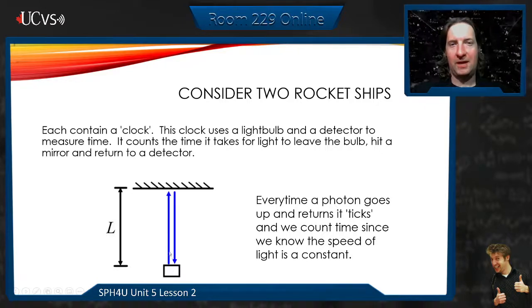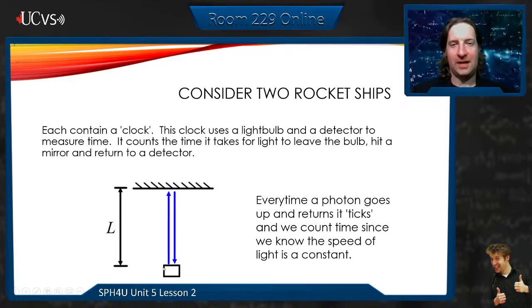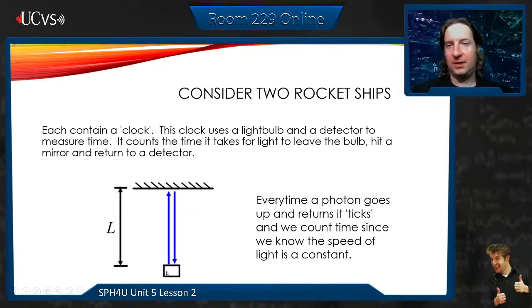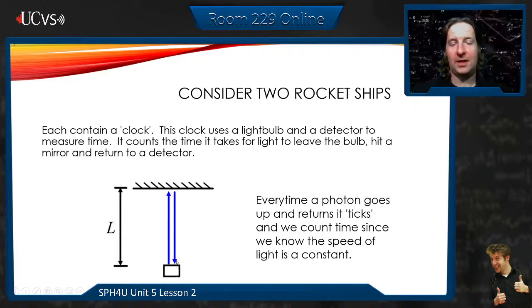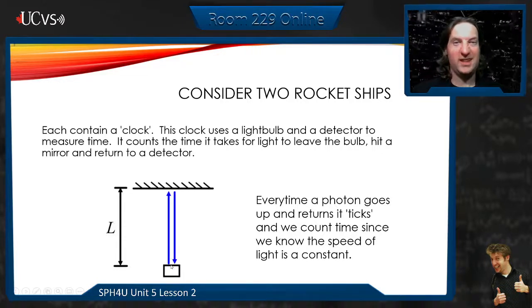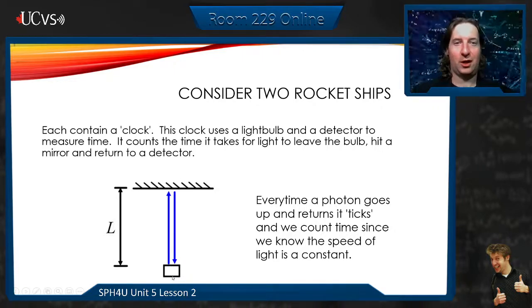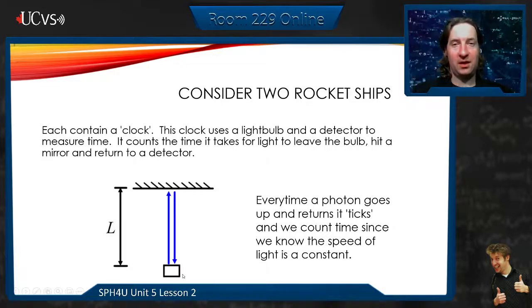So the time it takes for the light, now this is theoretically impossible, right? But we're just going to use this in our thought experiment as our clock. We're going to use something traveling at the speed of light as our clock. It's going to go up, it's going to come down, and it's going to tick. So every time it goes up and down, that's another tick in our clock. And we're going to use that as our time, because we know that the speed of light is constant.